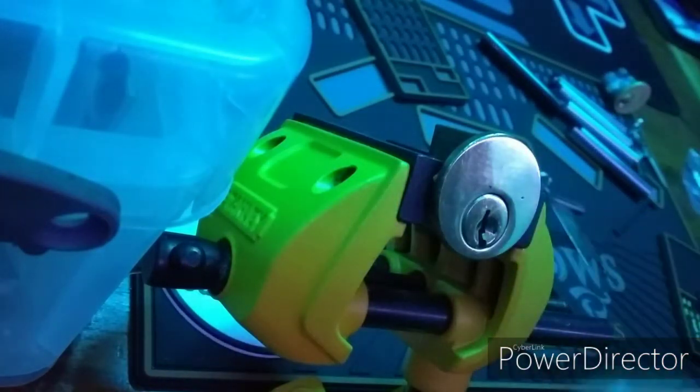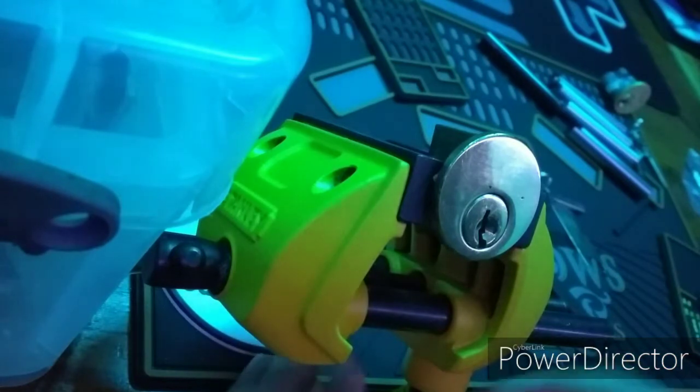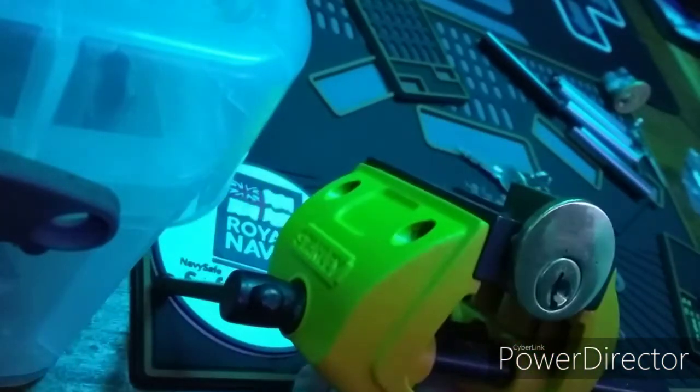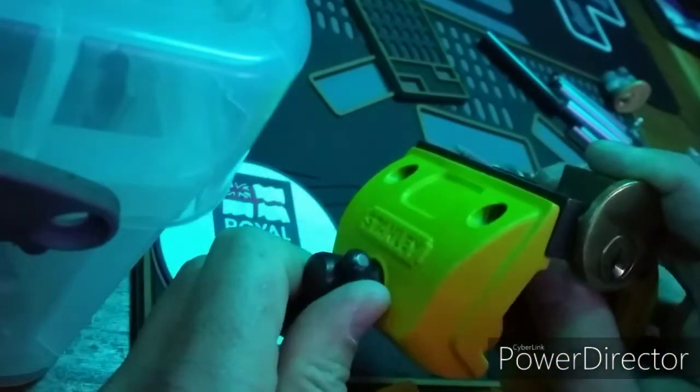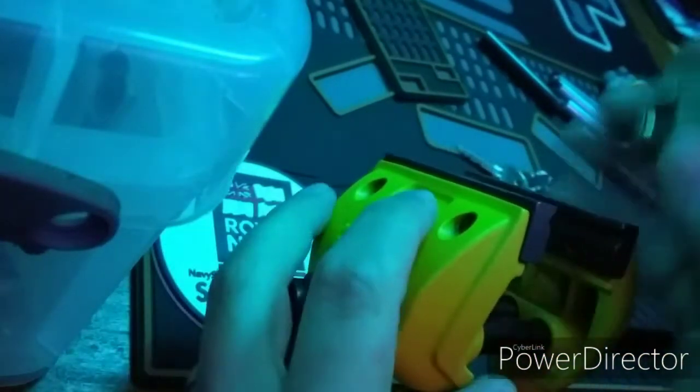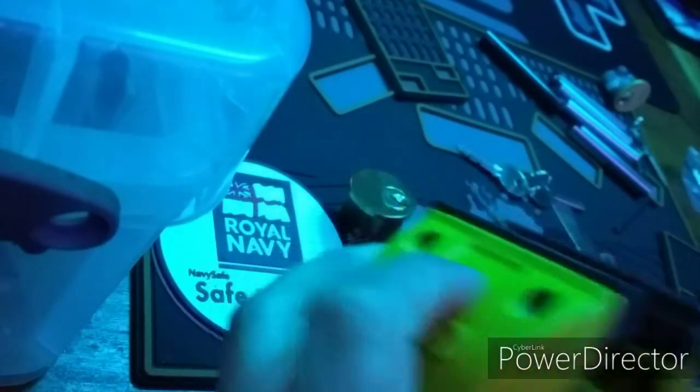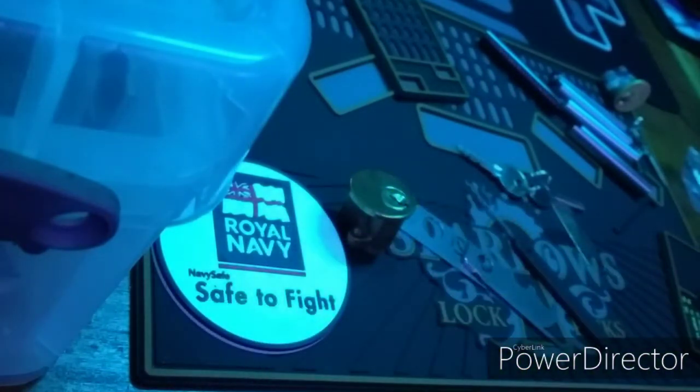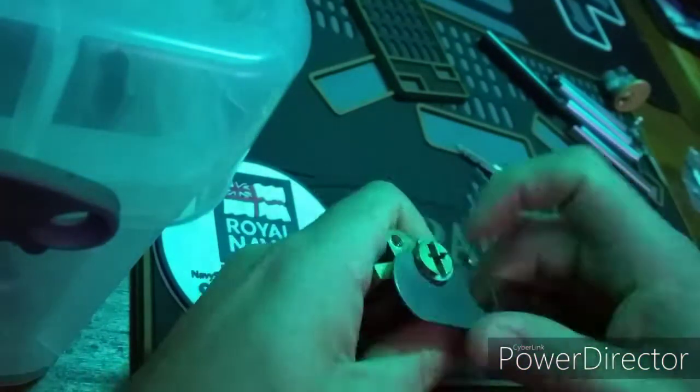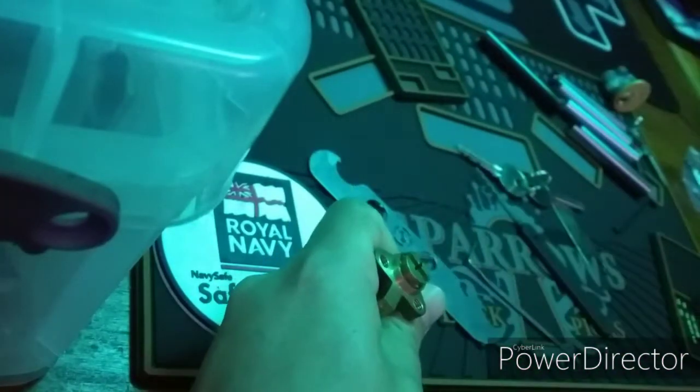For this test I am using my no-name Screwfix rim cylinder. It is a 5 pin lock. The key is pretty flat. I only need to show the lock what a rake looks like and it opens. So if I change the dull boring pins to security pins will I no longer be able to rake it? Will it make the lock more secure?